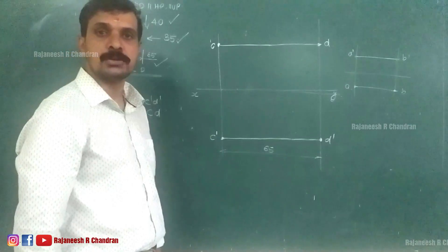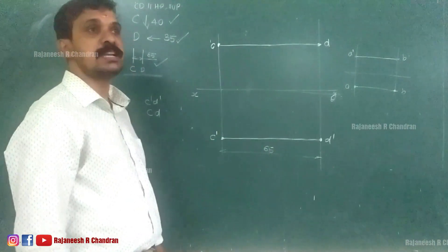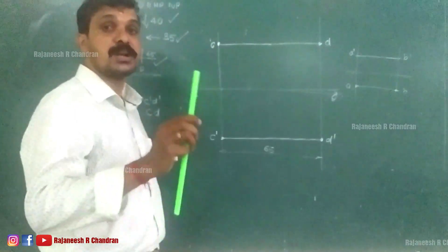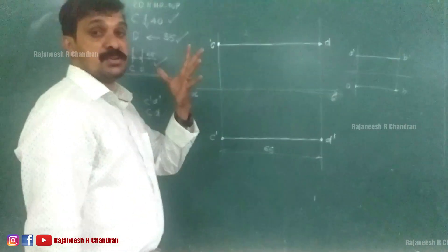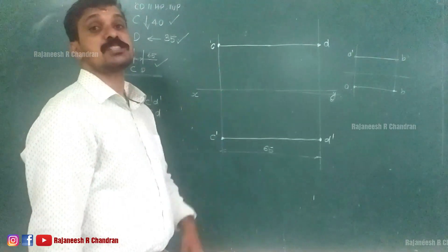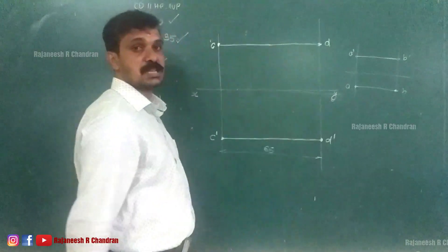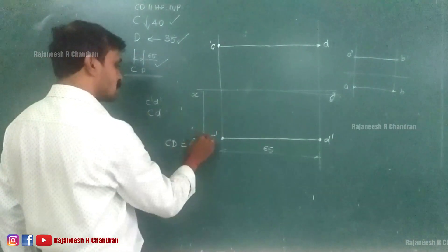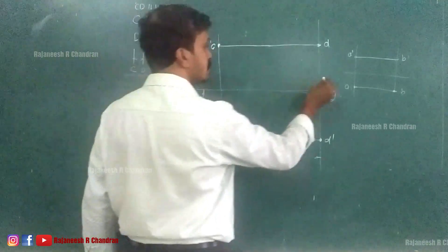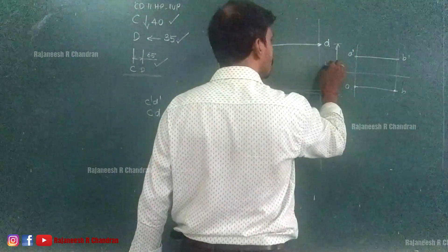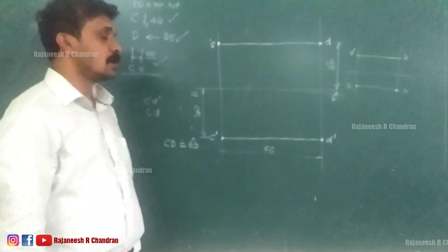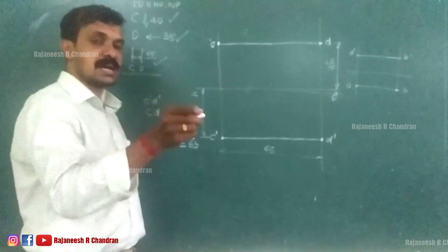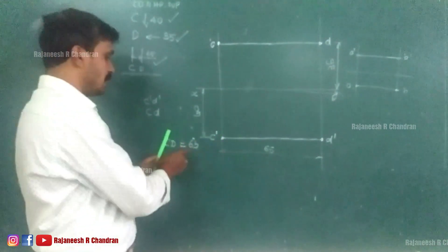We now have the projection of line CD. CD is the top view and C-dash D-dash is the front view. Since the line is parallel to both HP and VP, both projections show the true length. This distance is 65mm, so the true length of line CD is equal to 65mm.